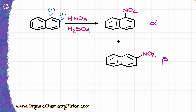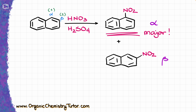Now, if the reaction occurred in a purely statistical fashion, we should expect to see both products in a roughly 50-50 ratio. One could make an argument that due to steric hindrance at the alpha position, the beta product should probably be the major product. And yet, when we do this reaction in the lab, we see that alpha-nitronaphthalene is the major product — roughly 90% alpha and about 10% beta. So, steric hindrance here is certainly not a factor.